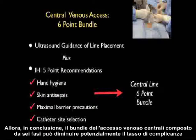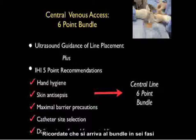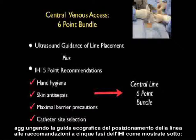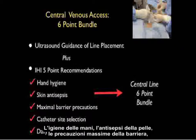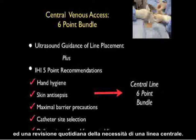In conclusion, the central venous access six-point bundle can potentially decrease the complication rate for patients undergoing this procedure. The six-point bundle is achieved by adding ultrasound guidance of line placement to the IHI five-point recommendations: hand hygiene, skin antisepsis, maximal barrier precautions, catheter site selection — favoring high lines over low lines — and daily review of the need for a central line.